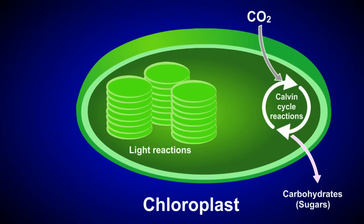The Calvin cycle reactions occur within the stroma of the chloroplast. The reactions use the ATP and NADPH produced by the light reactions to convert the CO2 to carbohydrate.